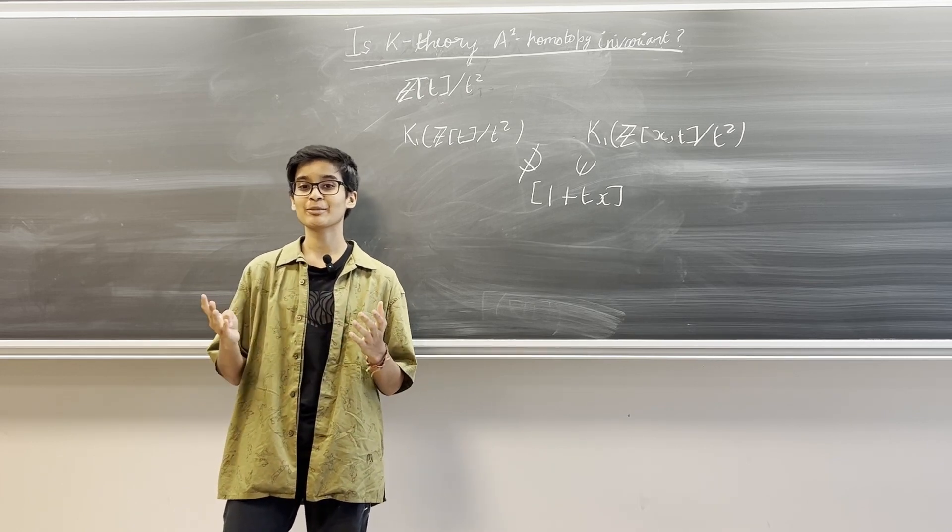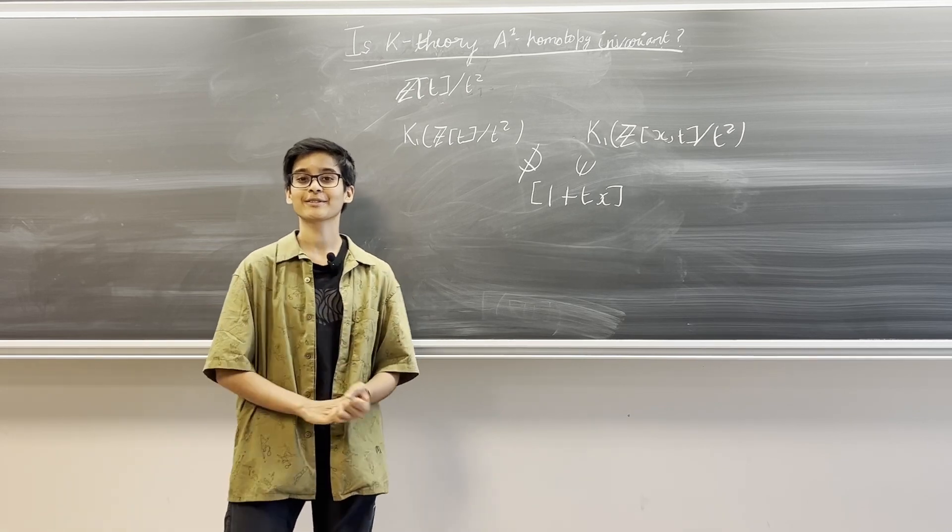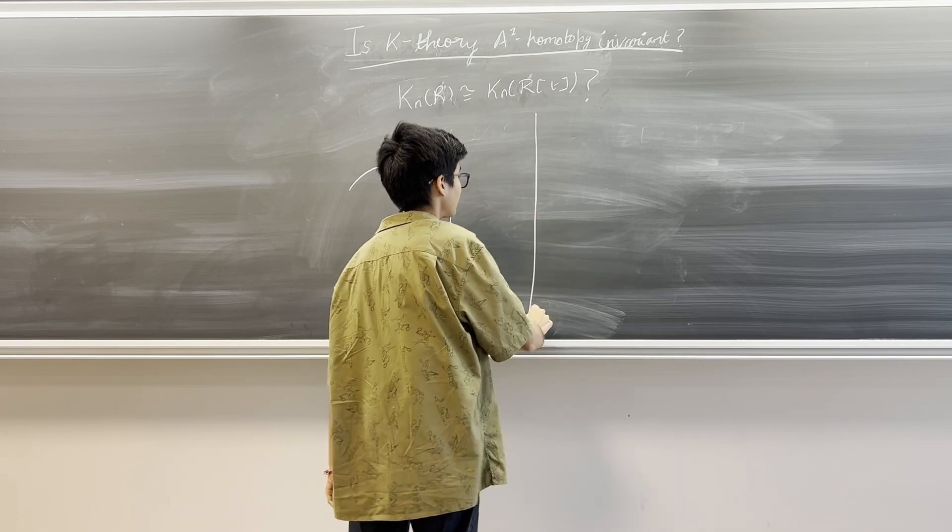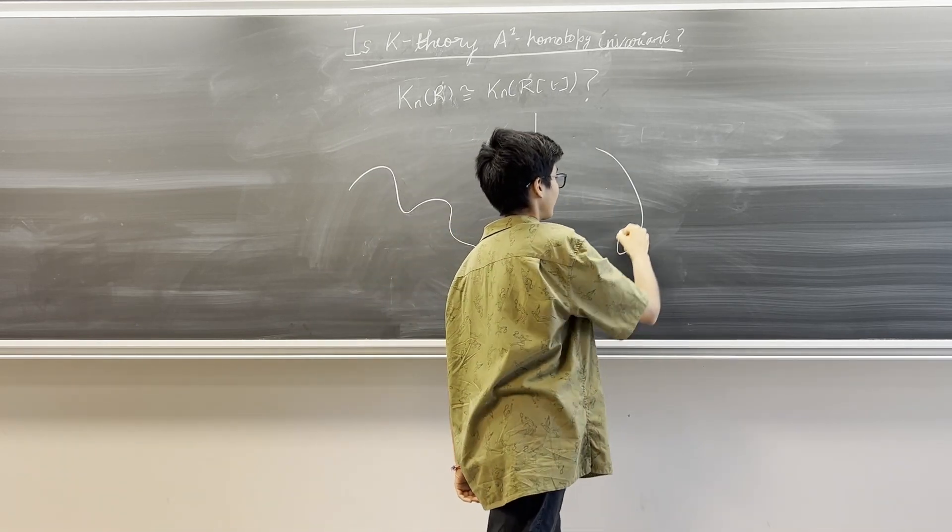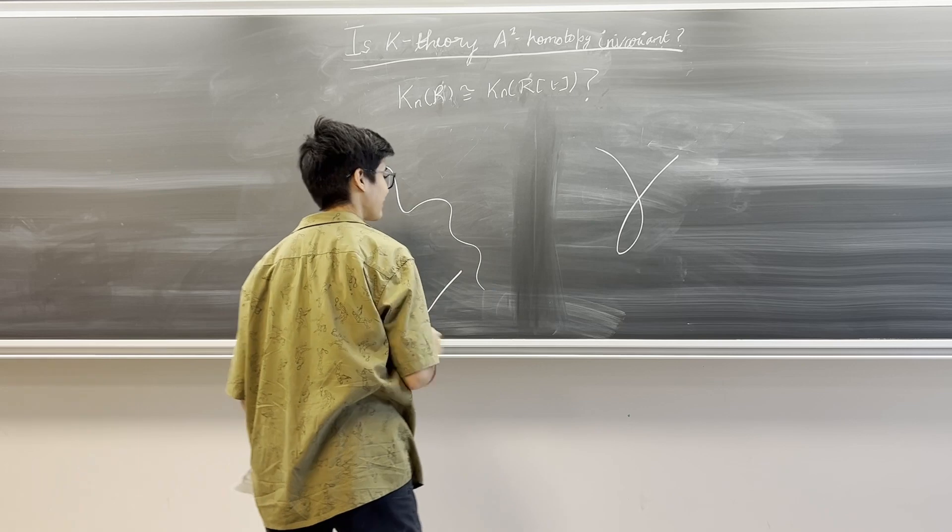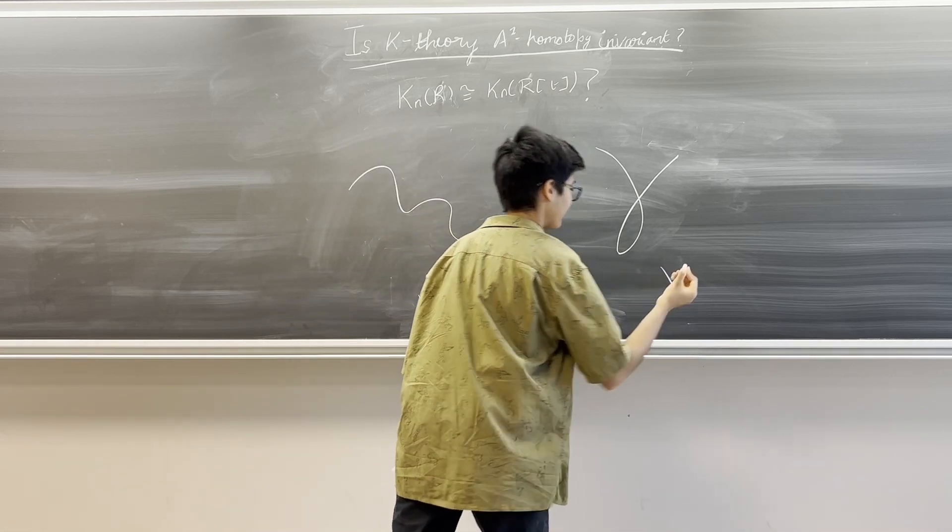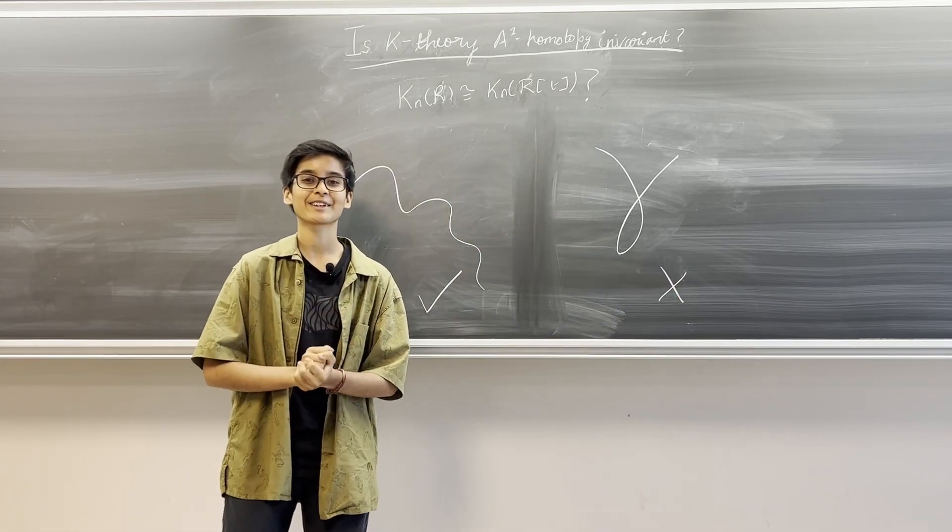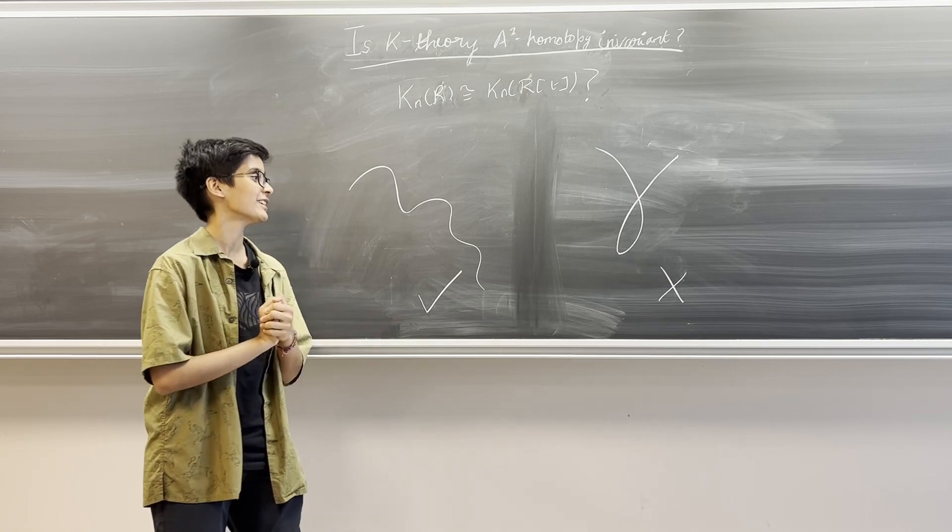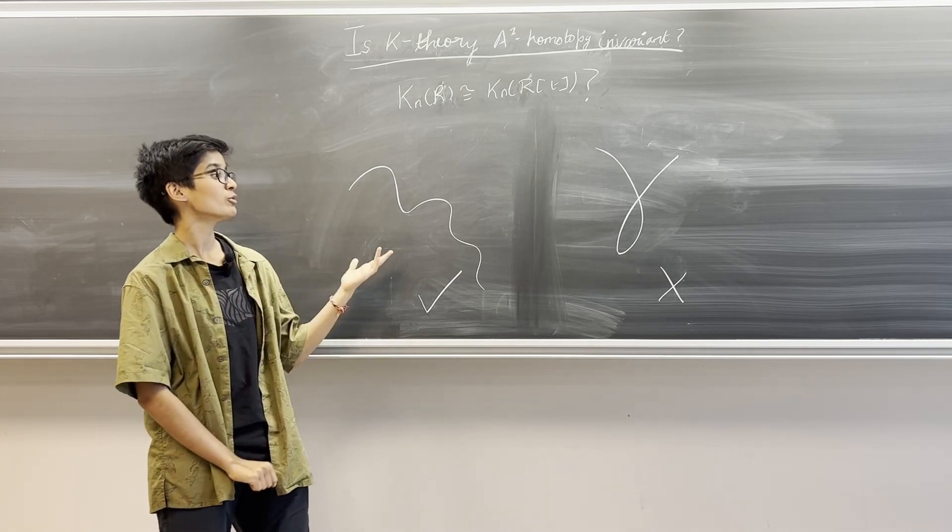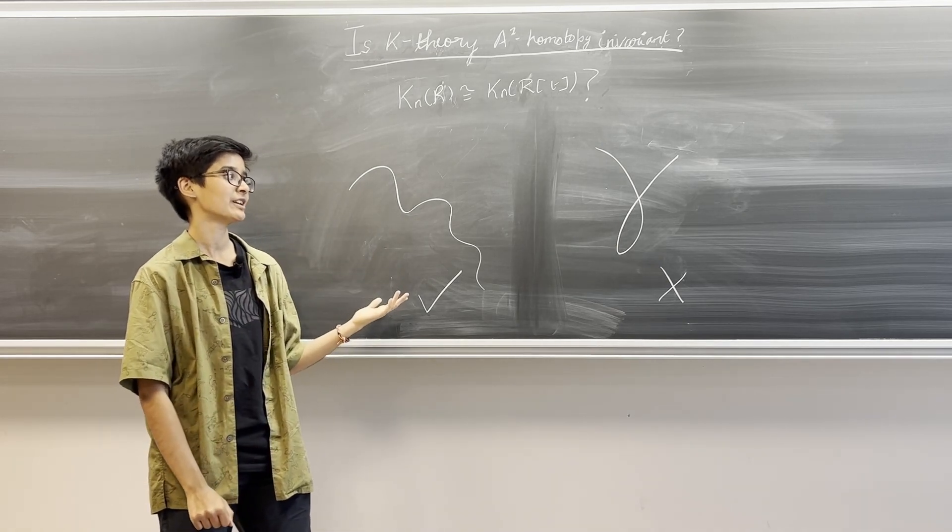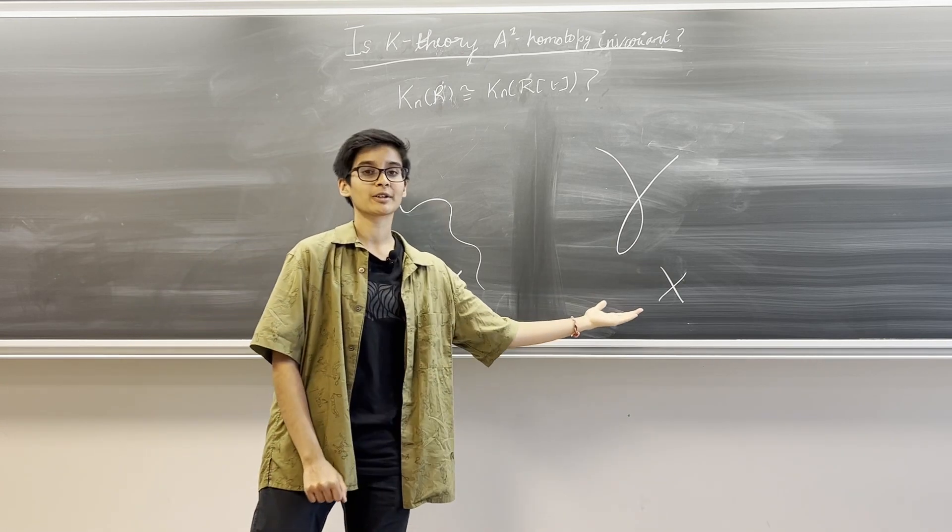Let us for example look at algebraic curves. In the case of algebraic curves, it's a known fact in algebraic K-theory that the K groups of a smooth curve are A1 homotopy invariant whereas those of a singular curve are not.